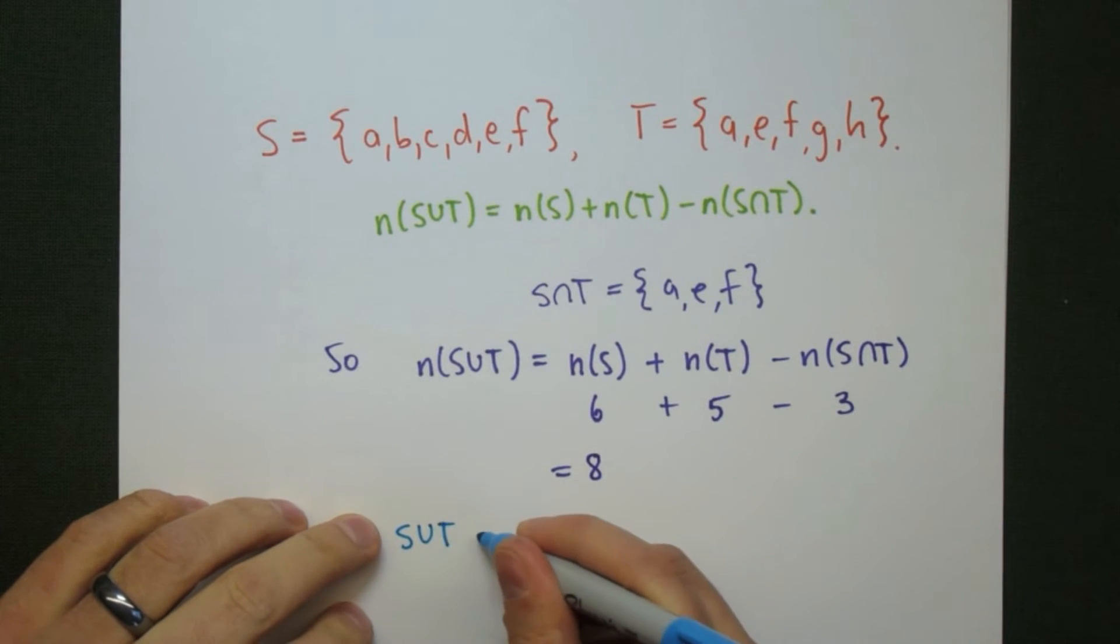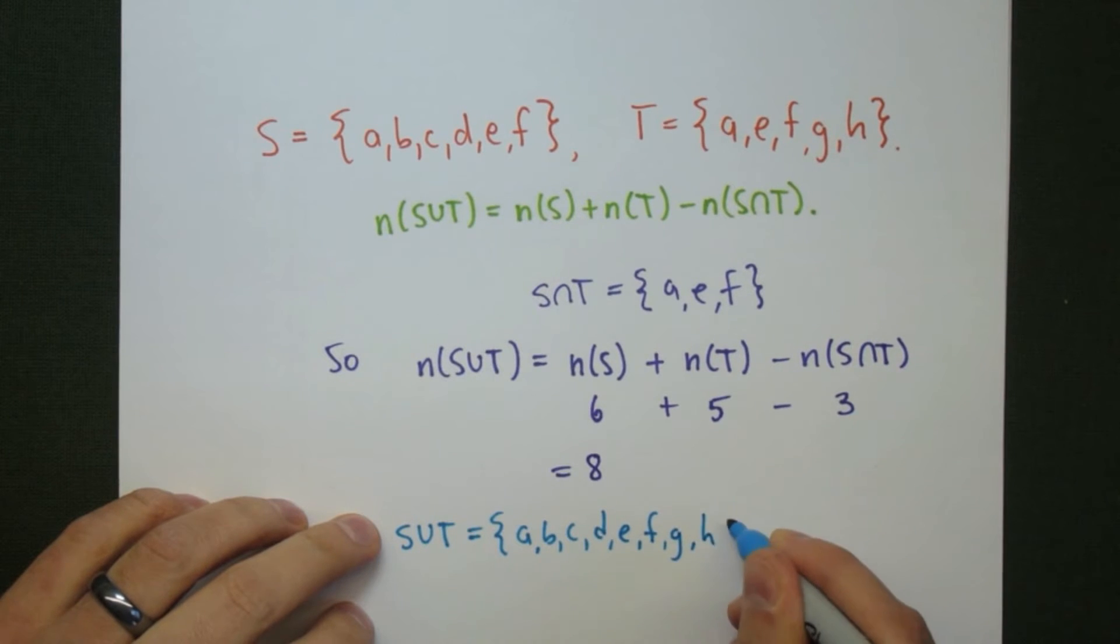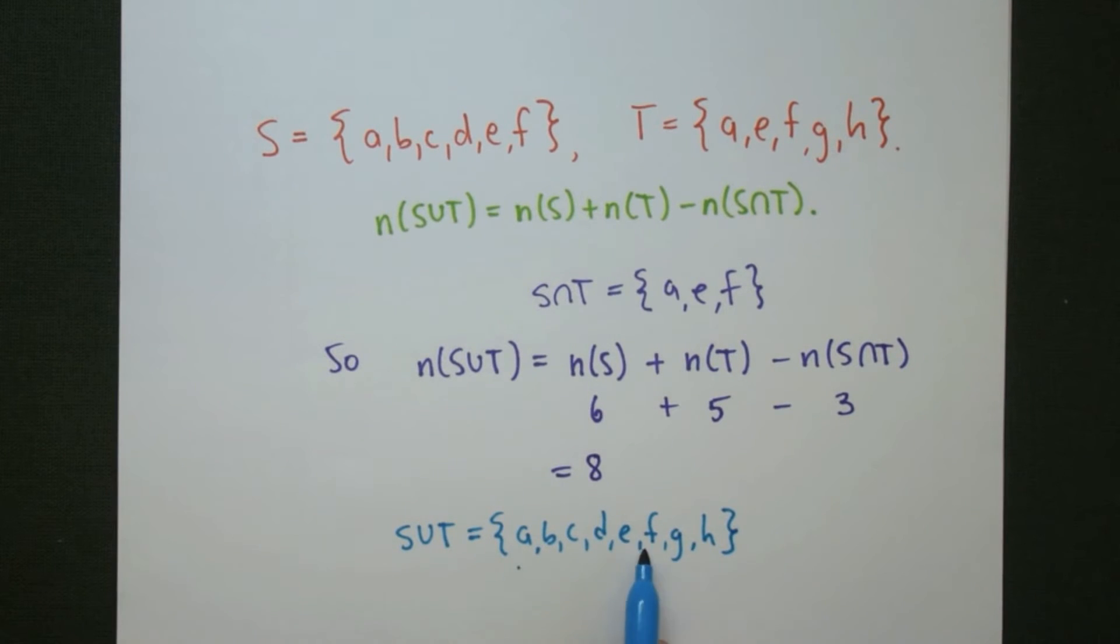And with these types of sets, we can check this really easily, because we can write down exactly what the union has to be. S union T is this set here, which has exactly 8 elements.